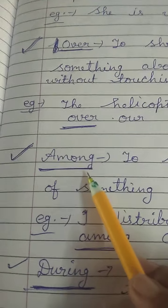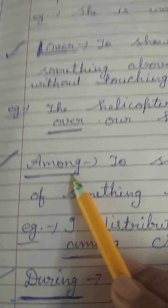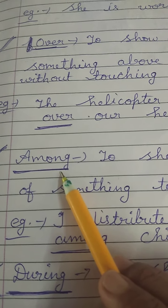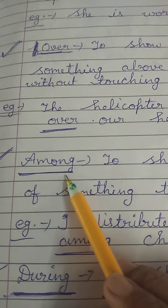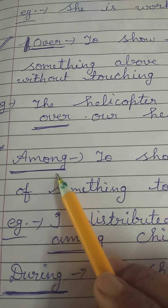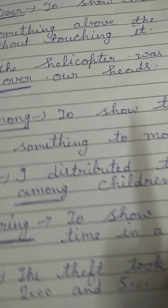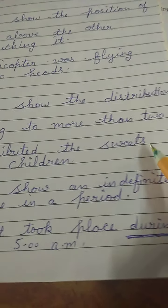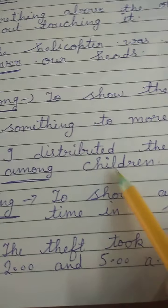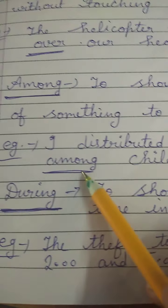Next is 'among', compared with 'between'. As discussed, if we want to distribute something between two people we use 'between', and if we want to distribute to more than two people we use 'among'. For example: I distributed the sweets among children — we are not specifying any two children, we are specifying all children, so we use 'among'.